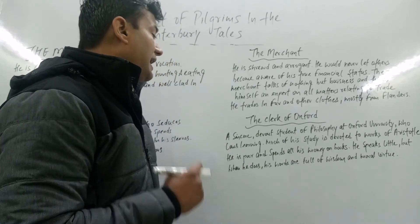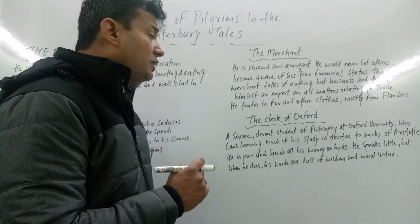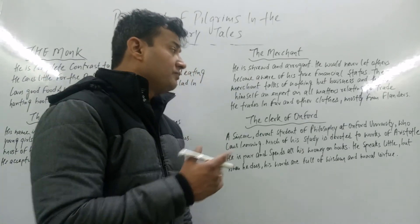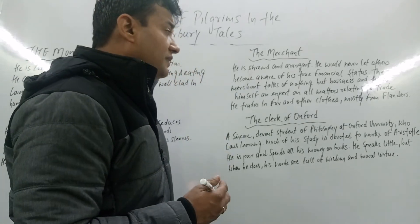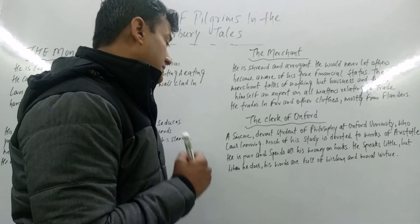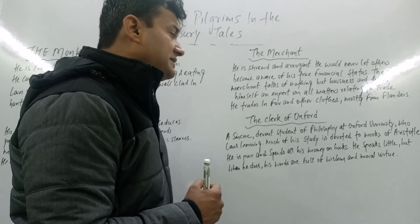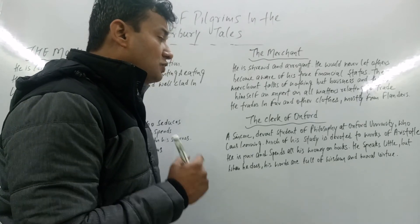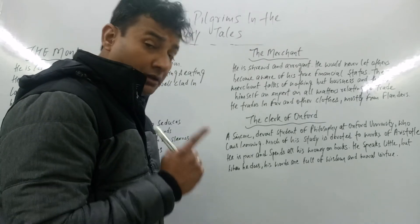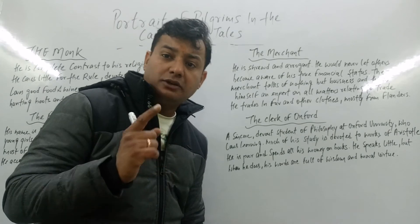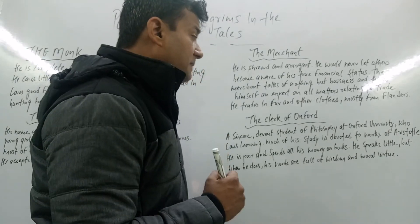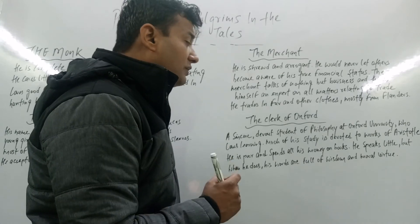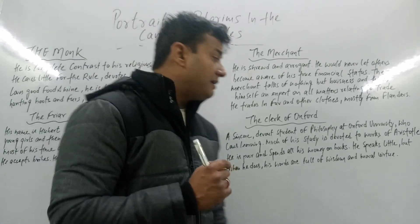The Clerk of Oxford is a sincere and devoted student of philosophy from Oxford University. He loves learning, and much of his study is devoted to the works of Aristotle. He is poor and spends all his money on books. Though he speaks little, when he does his words are full of wisdom and moral virtue.